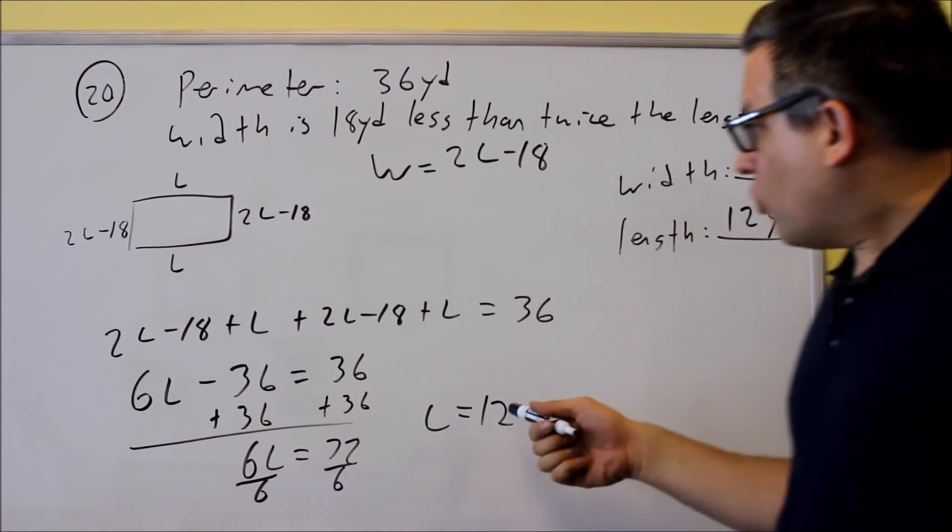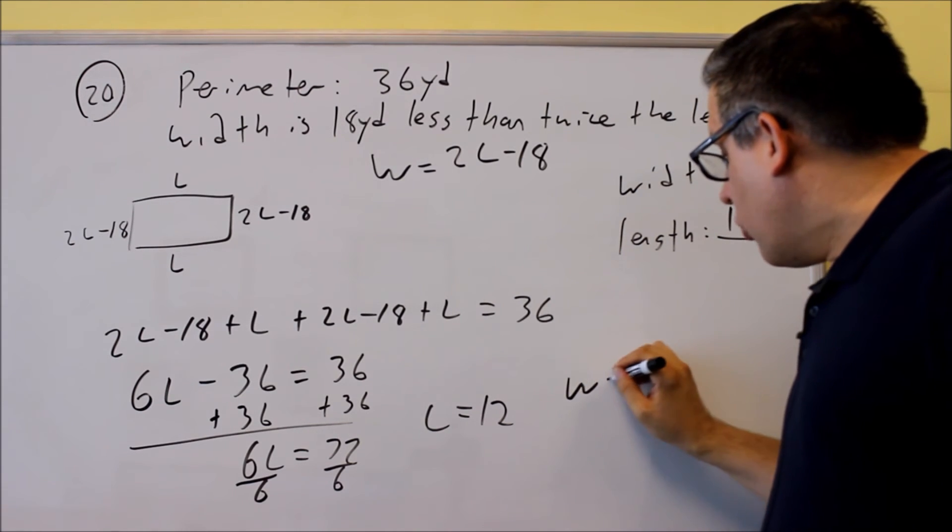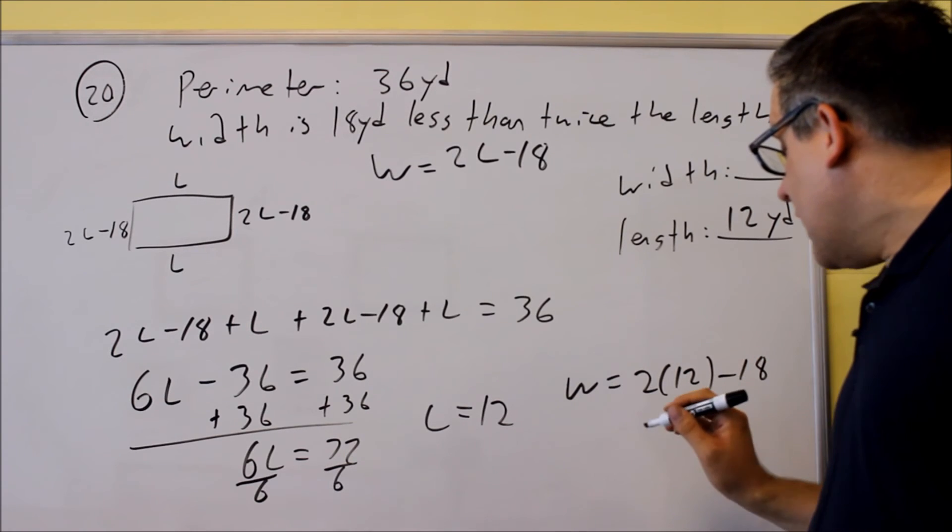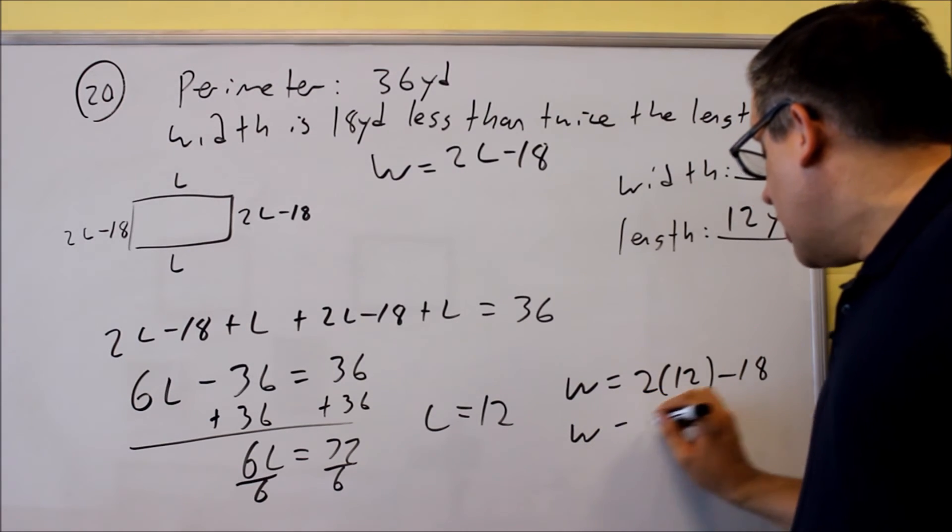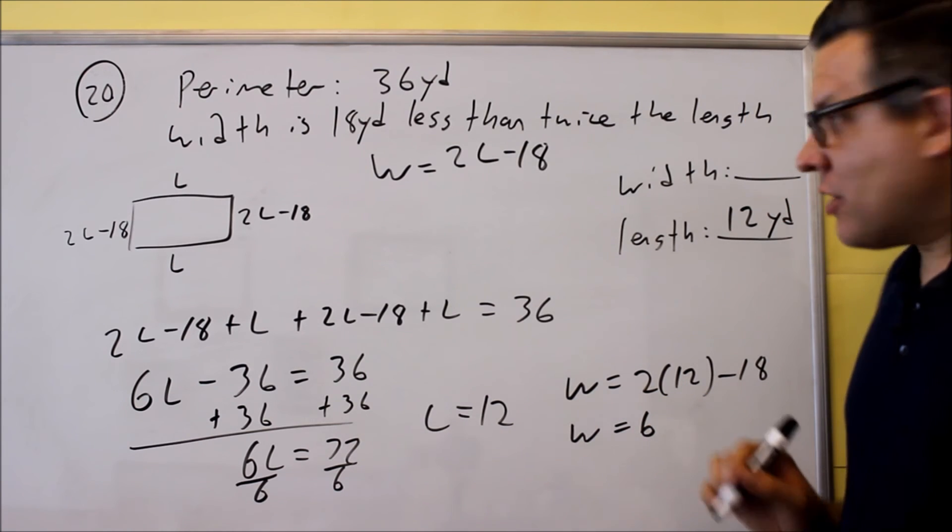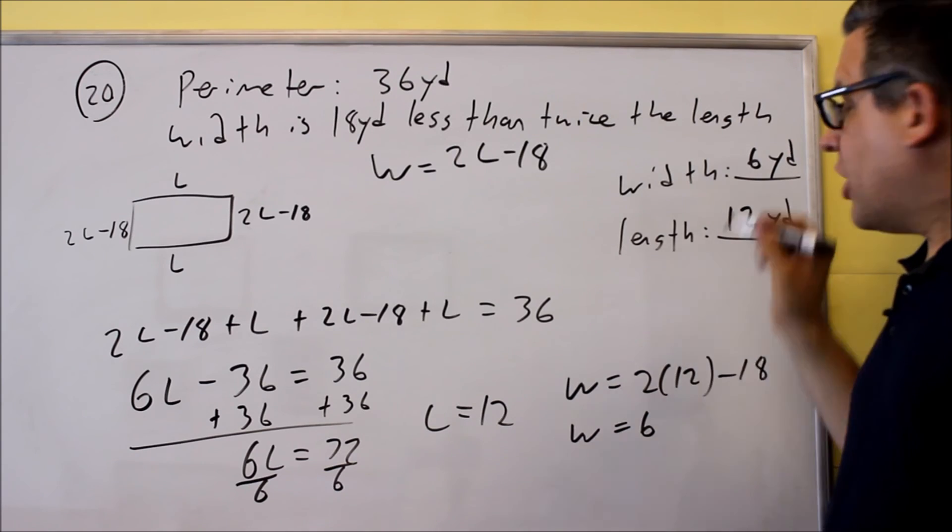Now we have to find the width, but we already have an expression for that. Width is 2 times 12 minus 18. So we get 24 minus 18, which is 6. So the width is 6 yards, the length is 12 yards.